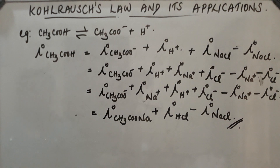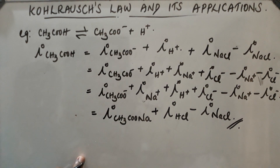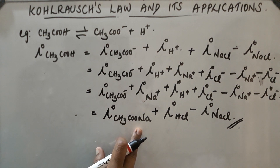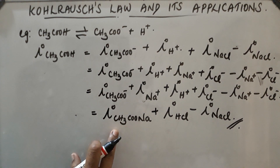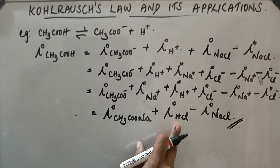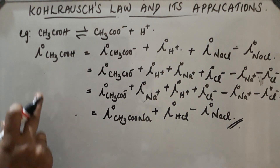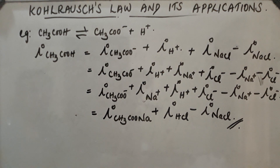By using this law, λ°(CH₃COOH) can be calculated if we know the limiting molar conductivity of CH₃COONa, the limiting molar conductivity of HCl, and the limiting molar conductivity of NaCl. This is an important application of Kohlrausch's Law — using it we can easily calculate the limiting molar conductivity of a weak electrolyte.